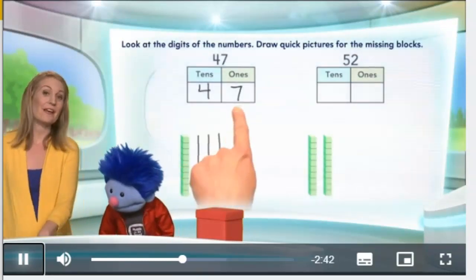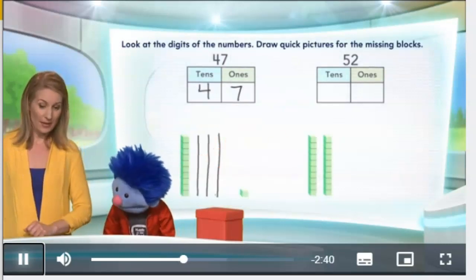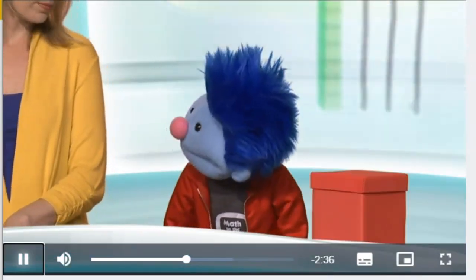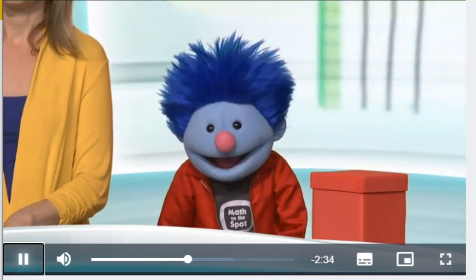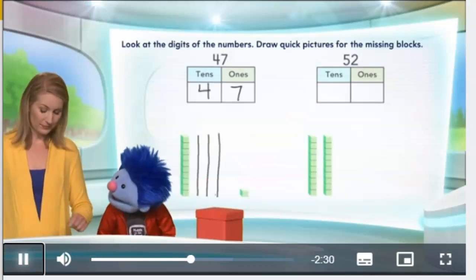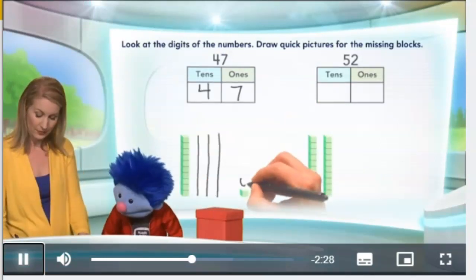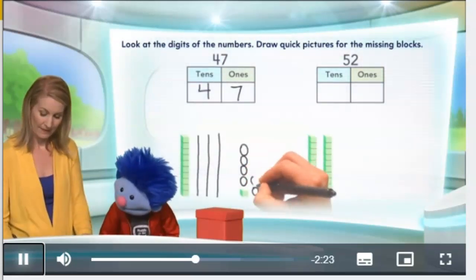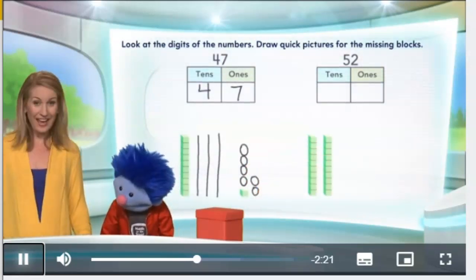Now what we need is seven ones. How many do we have already? You have one one. So we're missing some, aren't we? We sure are. We need seven of them. So let's go ahead and put them in. There's one. One. Two. Three. Four. Five. Six. Seven. Well done.